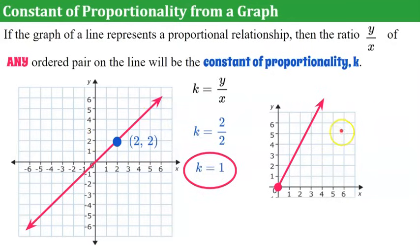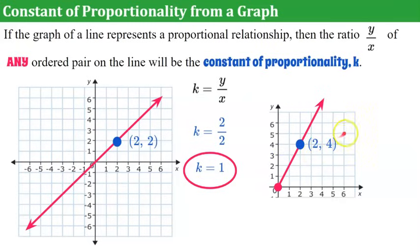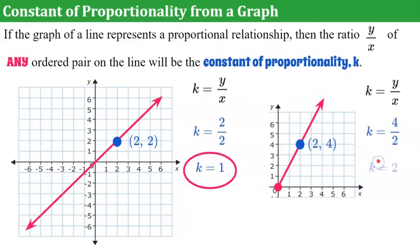Looking at the second graph, I need to identify a point on the line — any point except the origin. The ordered pair I pick is (2, 4). The constant of proportionality is the ratio y to x: y is 4, x is 2, giving us 4 to 2, which simplifies to 2. So the constant of proportionality of this line is 2.